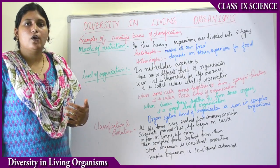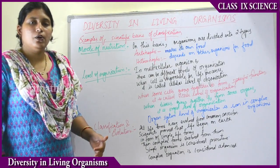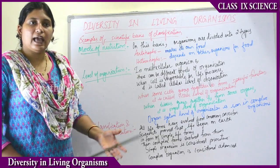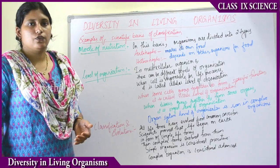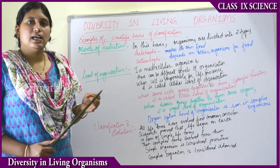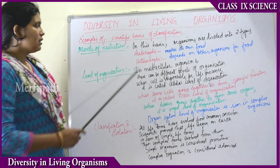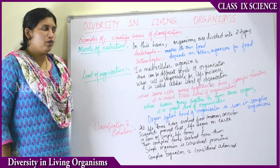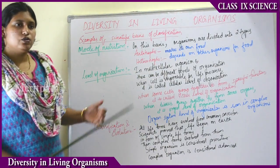Heterotrophs are organisms that cannot prepare their own food; they depend on other organisms for food — like animals. Animals depend on plants for food, and human beings depend on both plants and animals. That is the basic difference between autotrophs and heterotrophs.